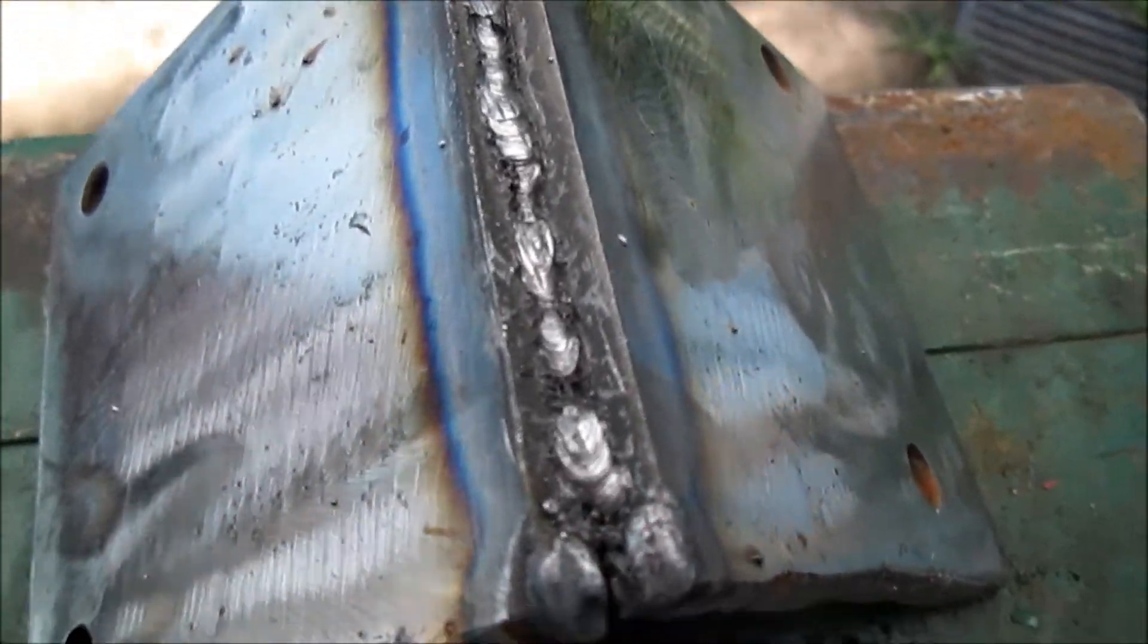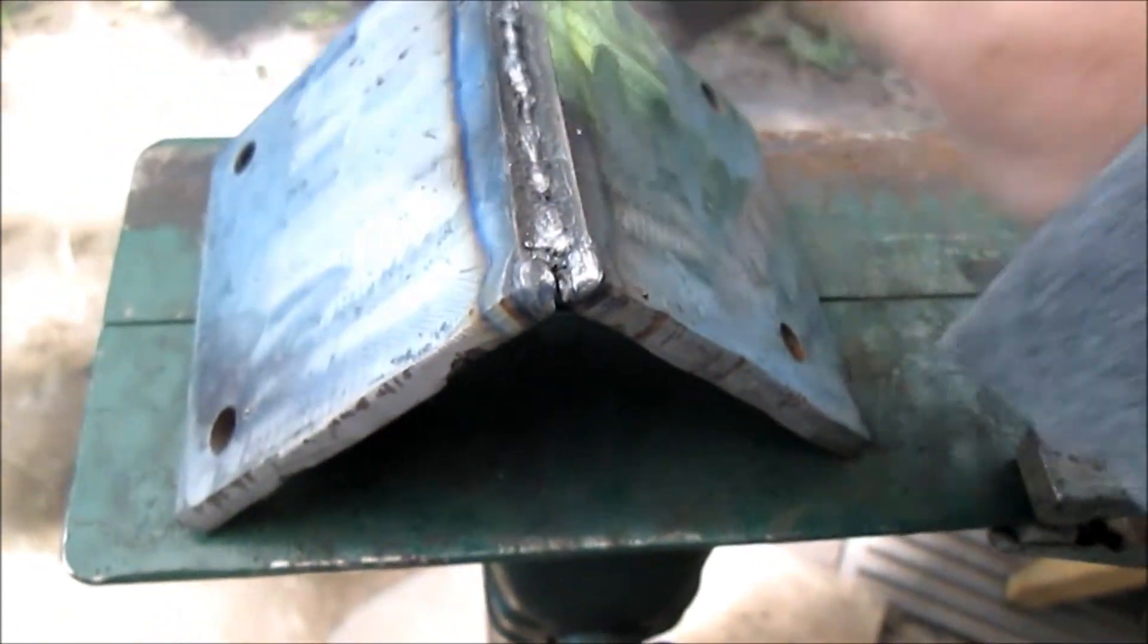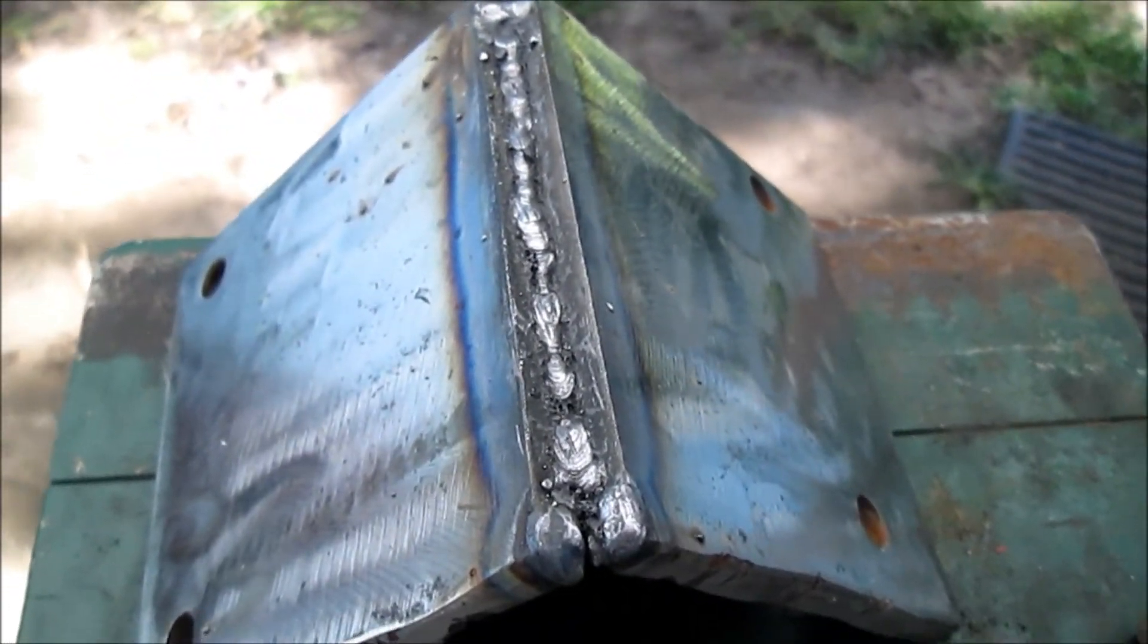Okay, this is just a real quick bead. It looks sloppy, but it's still square. Here's my little square. Still square. Next, we're going to put a bead on the inside and check it again.